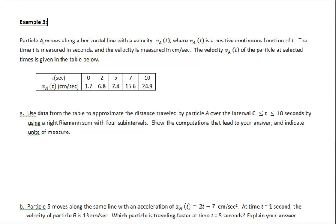In example three, we're looking at particle A moving along the horizontal line with velocity v sub a of t. It tells us that the velocity equation, whatever it is that we don't know, is positive and continuous. Time is measured in seconds and velocity is measured in centimeters per second, also given in the table. These are velocities of particle A at selected times.